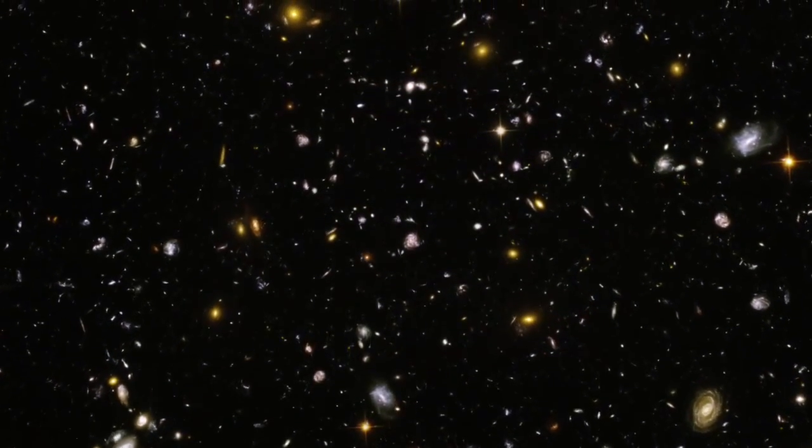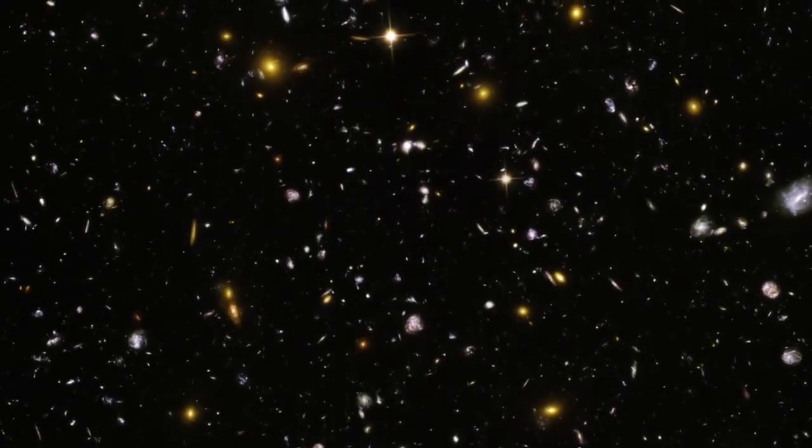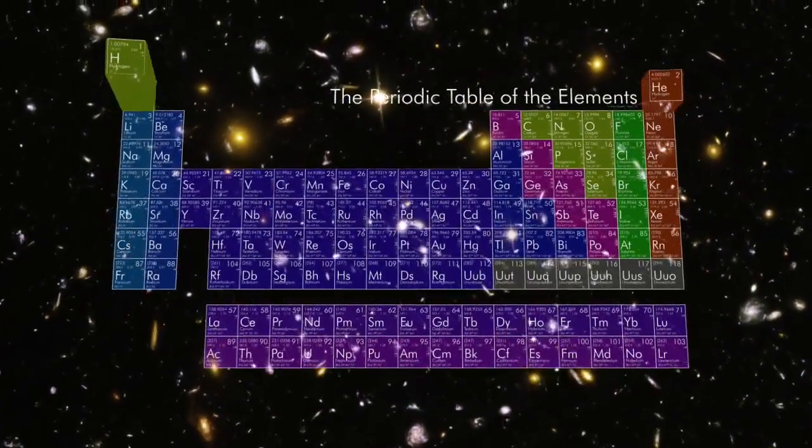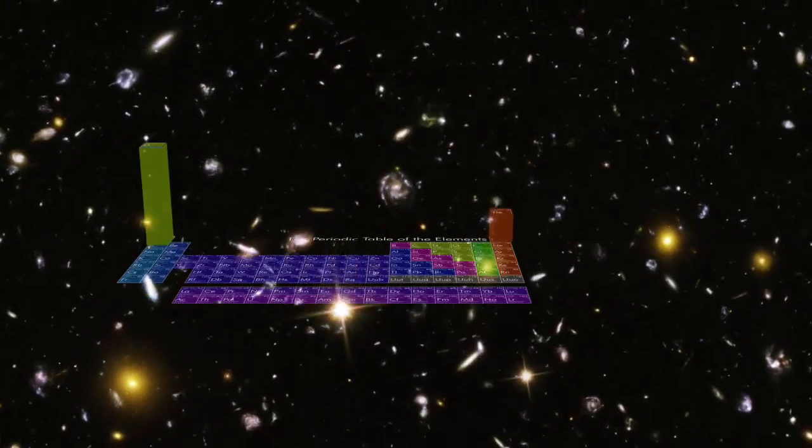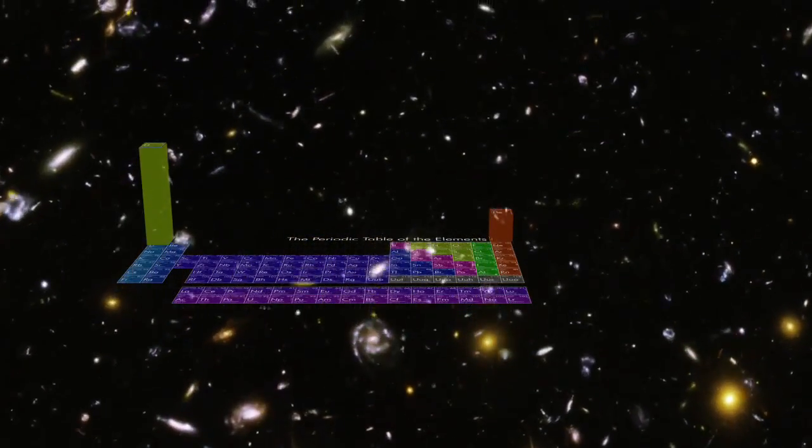What is the universe made of? The vast majority of it consists of the wispy cosmic lightweights hydrogen and helium. Everything else on the periodic table contributes only a small fraction of the whole.